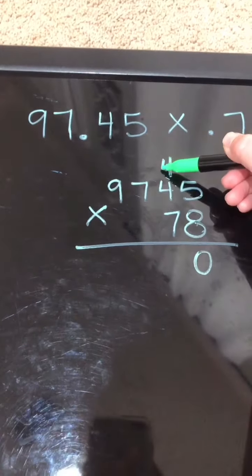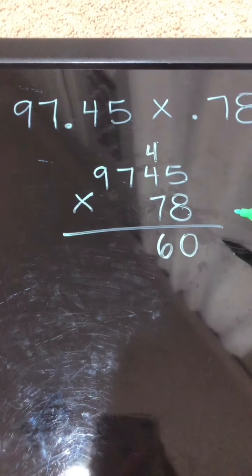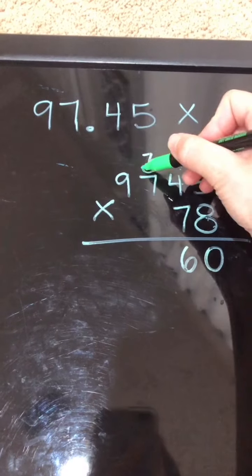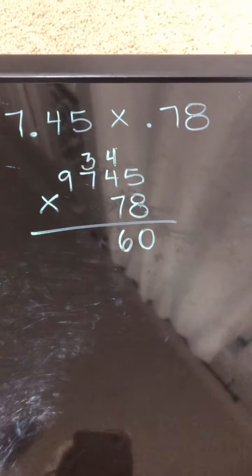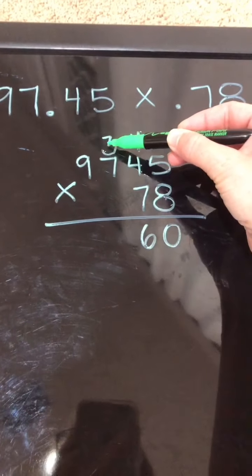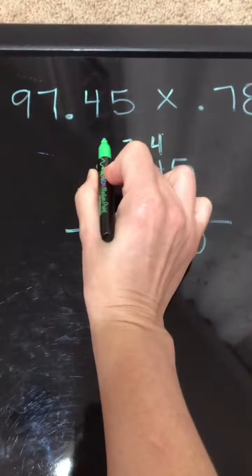I'm going to drop that 6 down and carry the 3. 8 times 7 is 56, 57, 58, 59. I'm going to drop the 9, carry the 5.